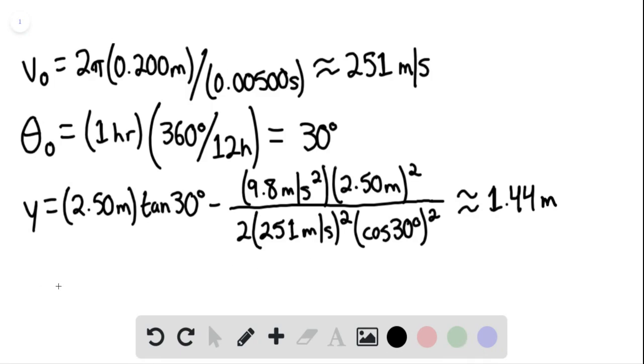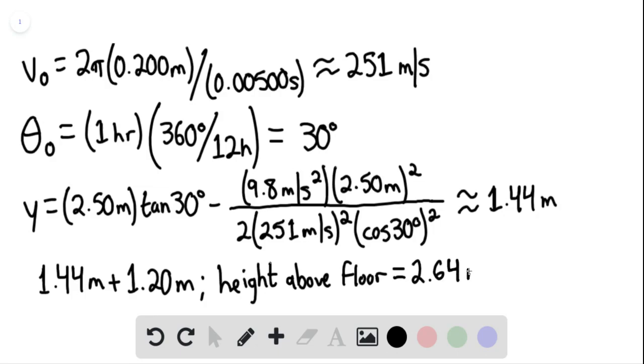And therefore, we can say the height above the floor would be 1.44 meters plus 1.20 meters. So we can say that then the height above floor will be equaling 2.64 meters.